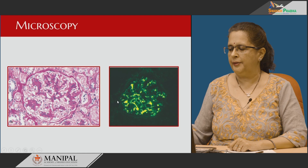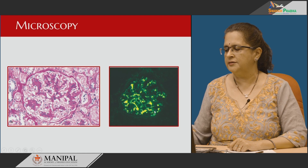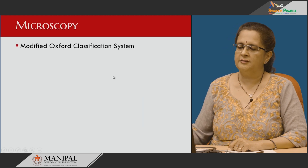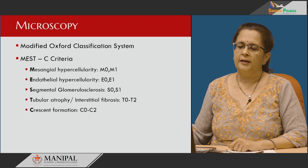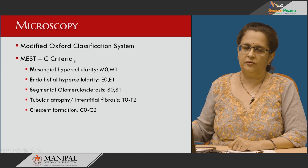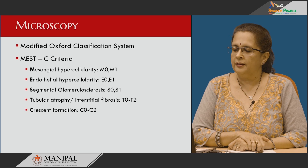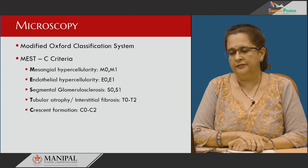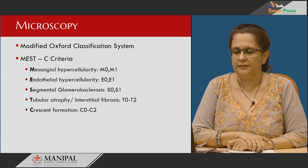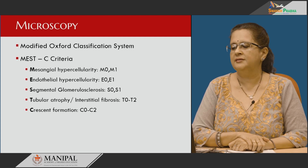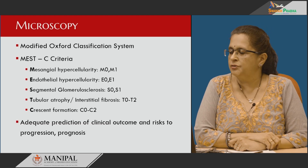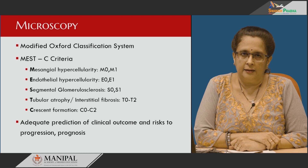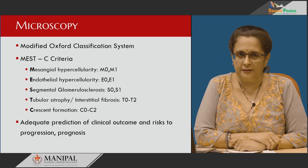Immunofluorescence depicts mesangial IgA deposits. We use the modified Oxford classification system — the MEST-C criteria — to prognosticate such patients. Earlier, different classification systems led to confusions on the clinical aspect. Now, MEST-C is universally recognized as an important classification system for adequate prediction of clinical outcome, risk of progression, and prognosis. As of now, the T aspect of MEST-C is considered more indicative.